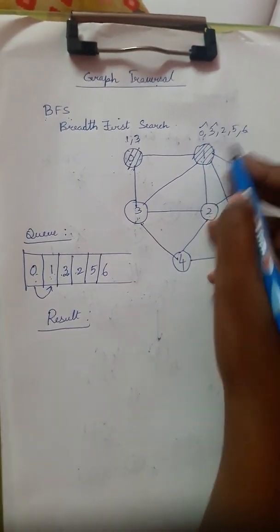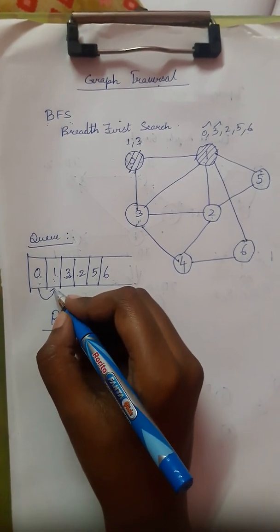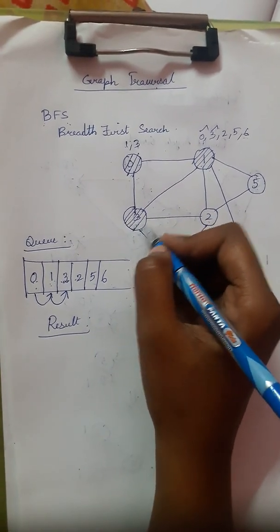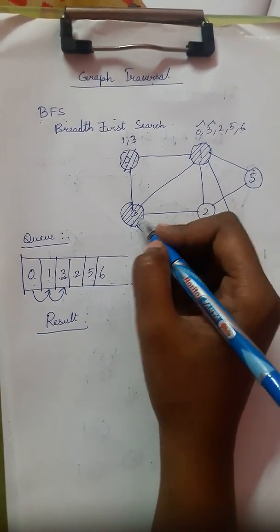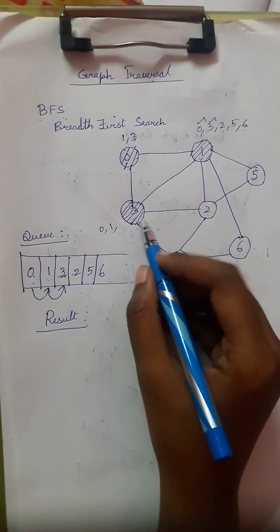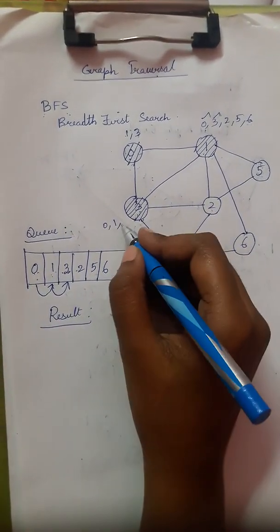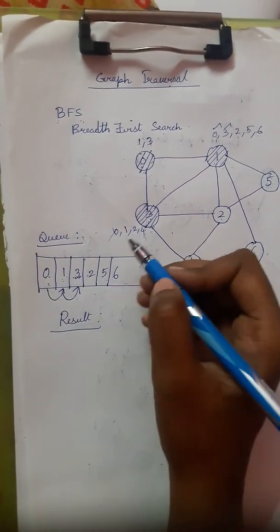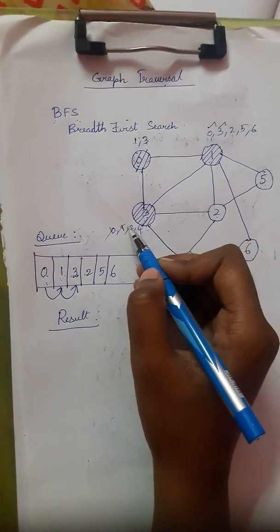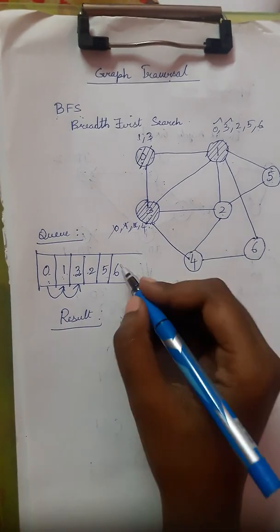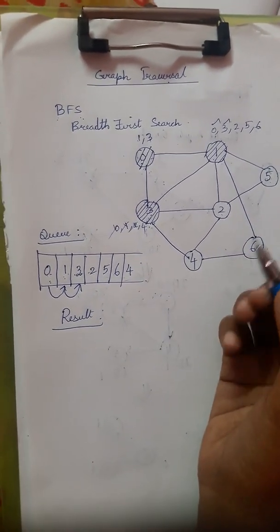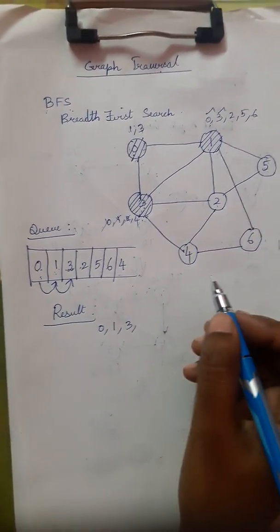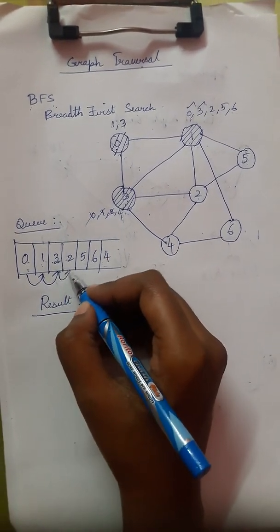Since 0 and 3 are already written in the queue, we only add 2, 5, and 6 to the queue. After visiting node 1, we move to node 3. Adjacent elements for node 3 are: 0, 1, 2, and 4. Since 0, 1, and 2 are already in the queue, we only add node 4.